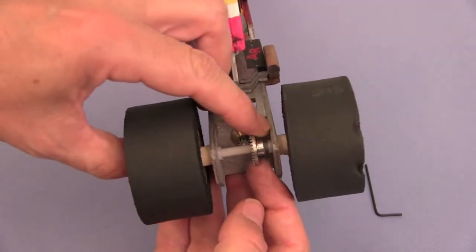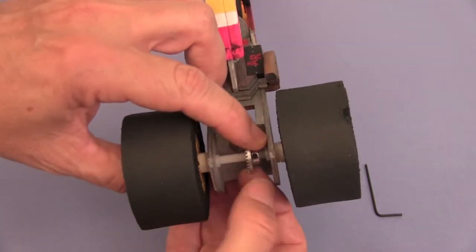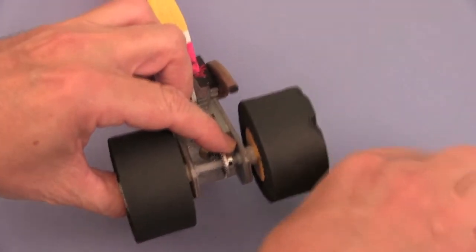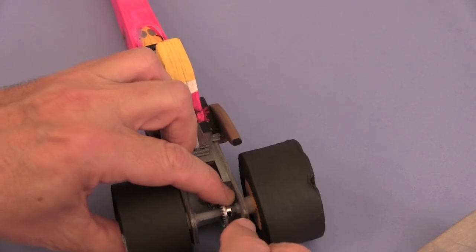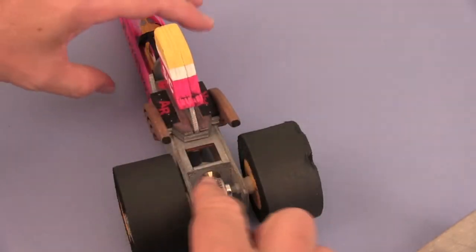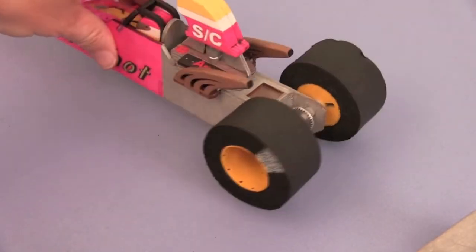Now I move my crown gear to mesh with the pinion. I use my Allen wrench to tighten it once it's in position. A little bit of WD-40 in there will do wonders.